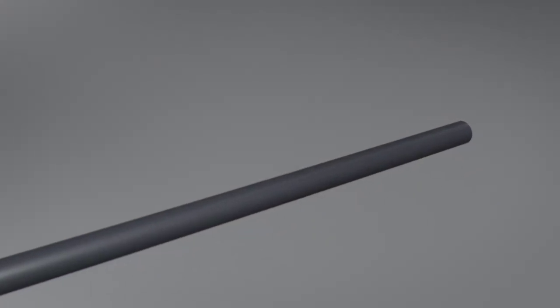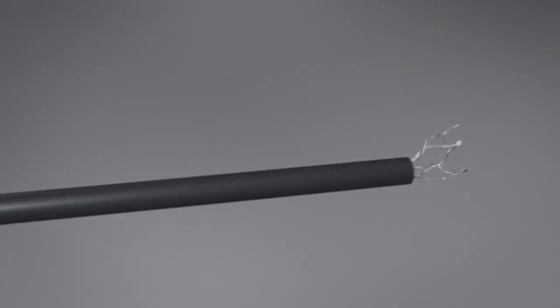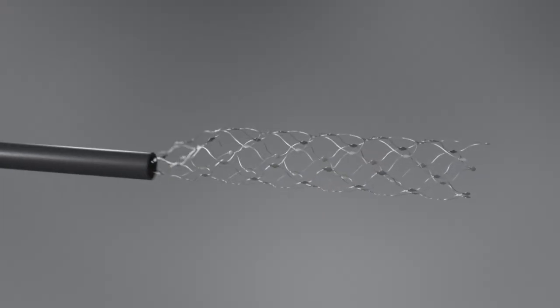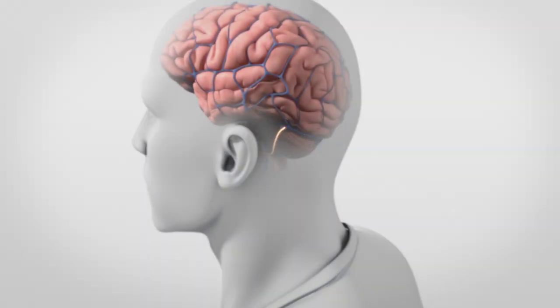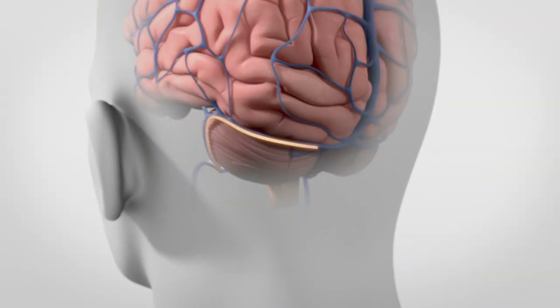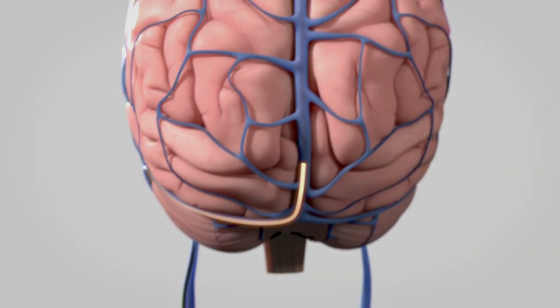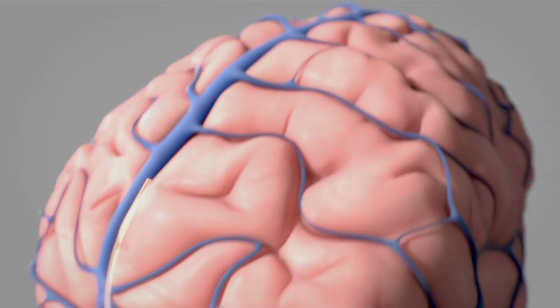The stentrode is a neural interface designed to overcome paralysis by creating a digital bypass from brain to assistive device. An investigational device, the stentrode is inserted via a catheter into the jugular vein and maneuvered into the brain without the need for open brain surgery.